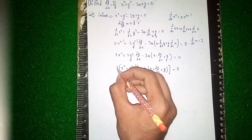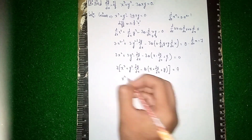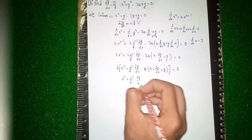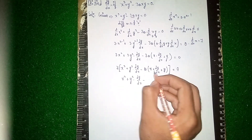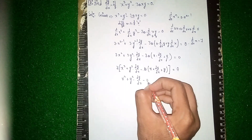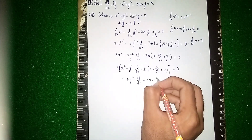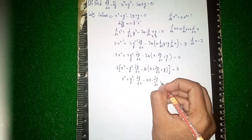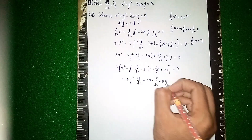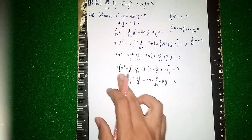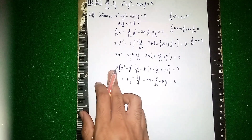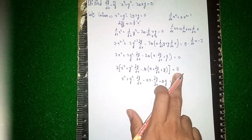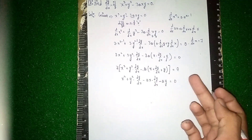What remains is: x² + y² · dy/dx minus a · (x · dy/dx + y) = 0. Expanding: x² + y² · dy/dx - a·x · dy/dx - a·y = 0. Zero divided by 3 is zero, that's why 3 is eliminated.